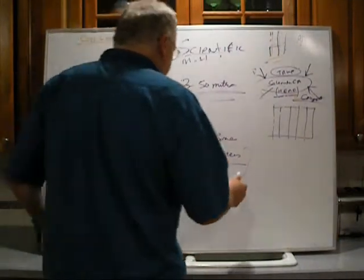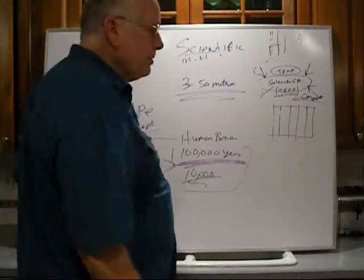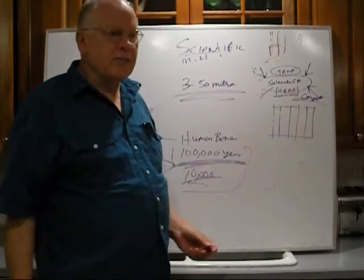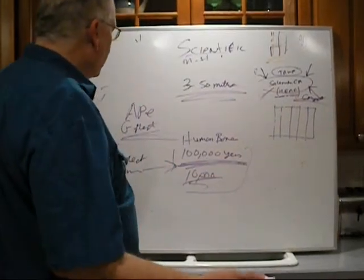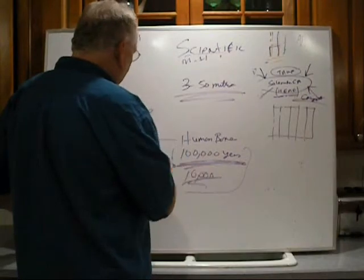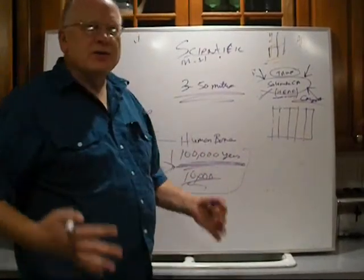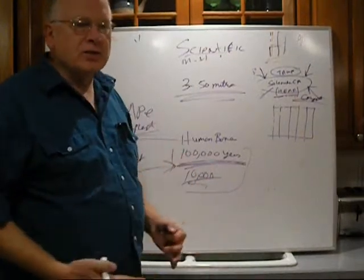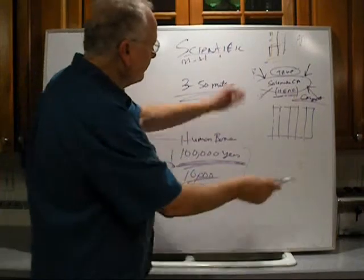Here's the problem. There's no evidence of any bones on the ground showing any evolution of man whatsoever from any other creature. Doesn't exist. In a hundred thousand years of whatever they think the humans have been here, you would see literally thousands and thousands of bones of samples of this path of evolution.